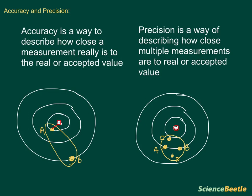Accuracy is a way to describe how close a measurement really is to an accepted value, and precision is a way of describing how close multiple measurements are to that real or accepted value.